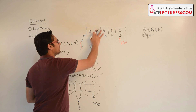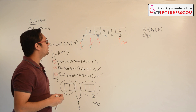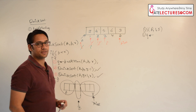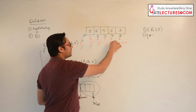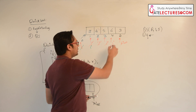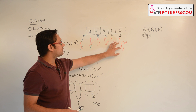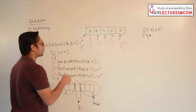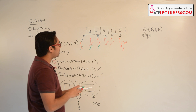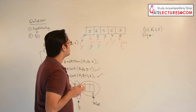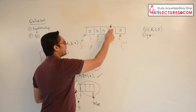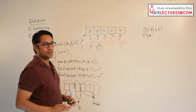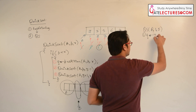Continuing the partition: increment j. Now 5 is greater than 3, do nothing; increment j. Now 6 is greater than 3, do nothing; increment j. Now this value is less than or equal to the pivot, so increment i and swap — instead of 4, the value 3 comes here and 4 goes there. After this, the value of i is 2, therefore q gets the value 2.